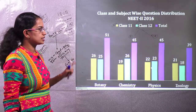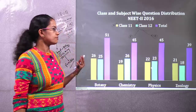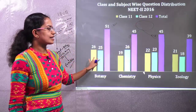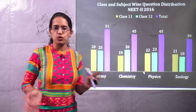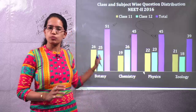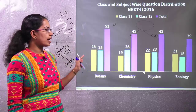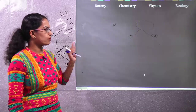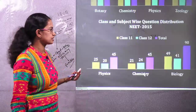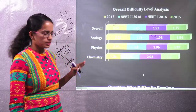For 2016, there were two phases — phase 1 and phase 2. However, the pattern remains more or less the same. More weightage was given to the botany section compared to zoology, and for 11th there was more weightage for biology, while for 12th there was more weightage for physics and chemistry. That has been the general analysis over the years.